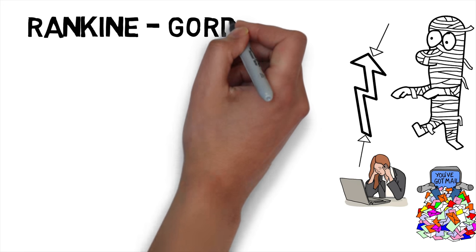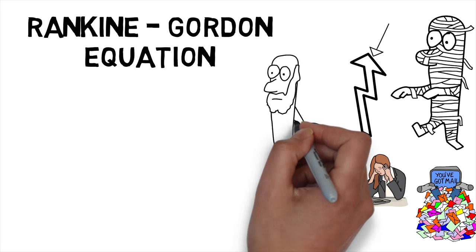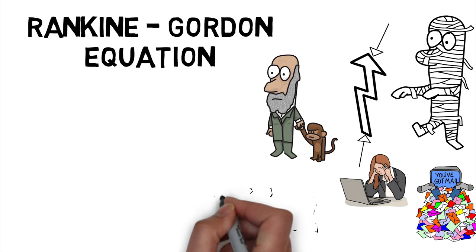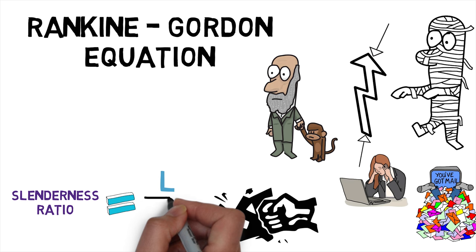For struts in this category, a suitable formula is the Rankine-Gordon equation which is a semi-empirical formula and takes into account the crushing strength of the material. It's Young's modulus and the slenderness ratio which is the ratio of the length L of the strut to its least radius of gyration K.